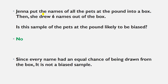Suppose Jenna put the names of all the pets at the pound into a box — all the names — and then she drew six names out of the box. Is this sample biased or unbiased? The answer is no, it is not biased. Since every name had an equal chance of being drawn from the box, it is not a biased sample.